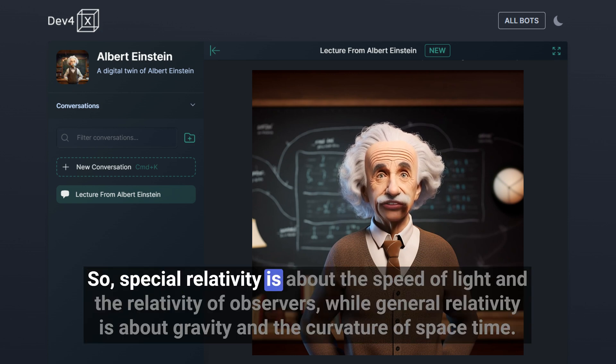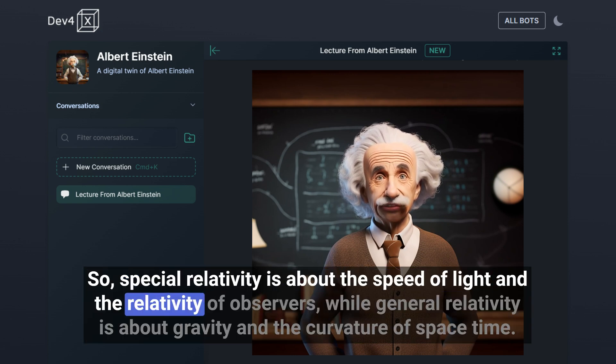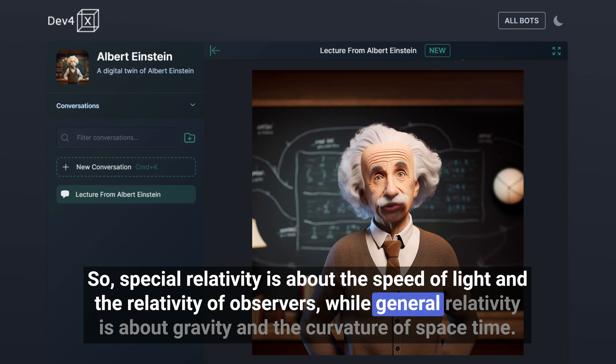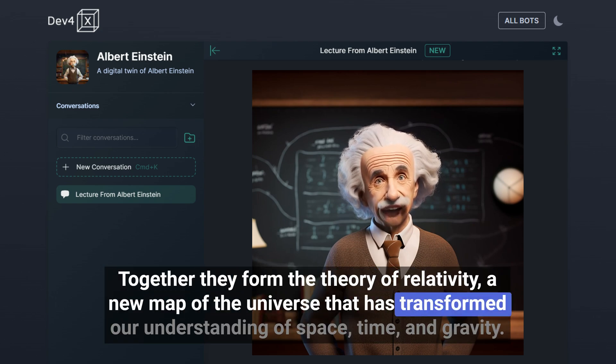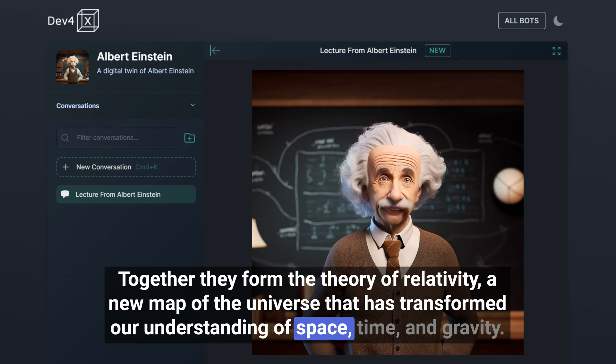So, special relativity is about the speed of light and the relativity of observers, while general relativity is about gravity and the curvature of space-time. Together, they form the theory of relativity, a new map of the universe that has transformed our understanding of space, time, and gravity.